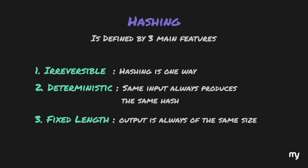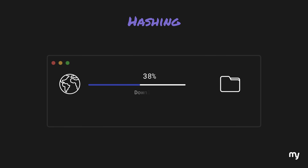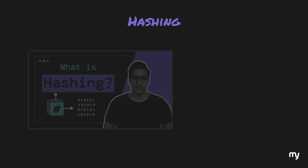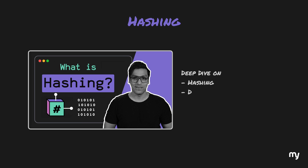Hashing is not only used in passwords, but it has other applications as well. For example, in file downloads — if the downloaded file is corrupt, its hash would be different from the original file. If you're intrigued by hashing, check out my deep dive video on what is hashing, to learn about different hashing algorithms and hash collisions.